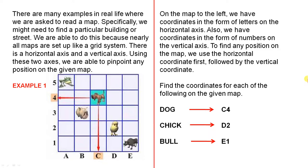There are many examples in real life where we are asked to read a map. Specifically we might need to find a particular building or street. We are able to do this because nearly all maps are set up like a grid system. There is a horizontal axis and a vertical axis. Using these two axes we are able to pinpoint any position on the given map.